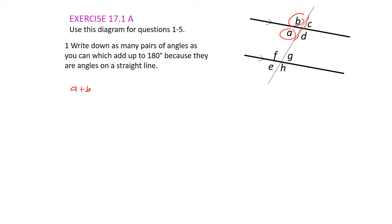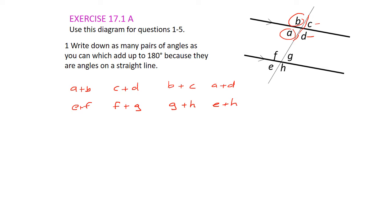We could then have c plus d on the other side, but you could also look at b plus c because they're on a straight line, or a plus d — all of those add up to 180 degrees. We could also have e and f, f and g, g and h, and e and h — so eight answers altogether. Check yours, and if you've got any questions you can always get back to me in the virtual classroom.